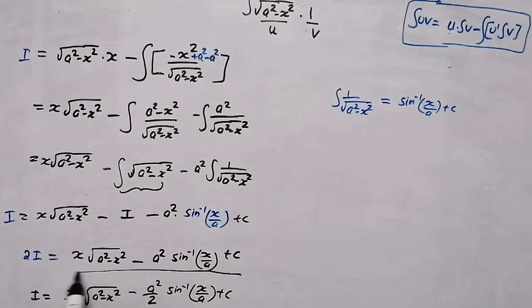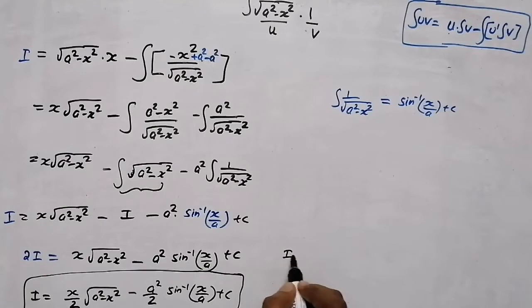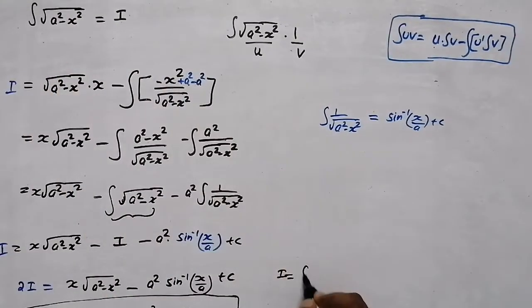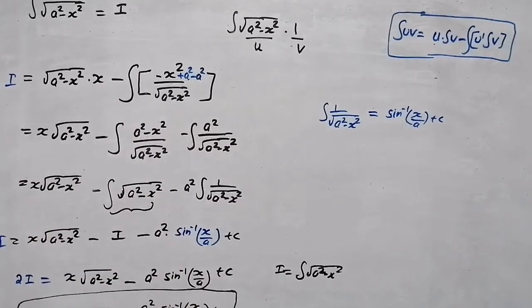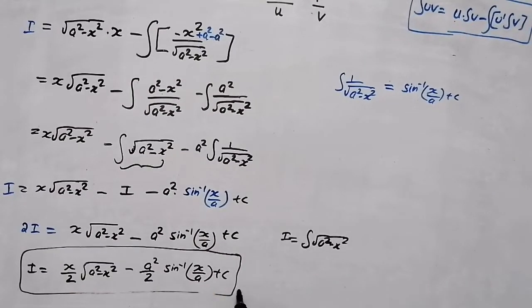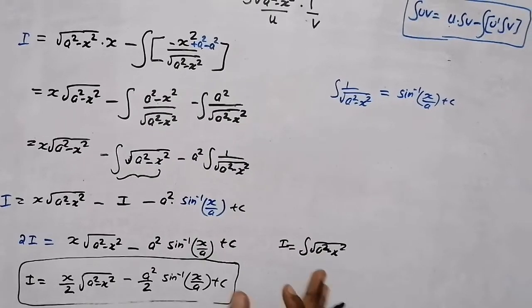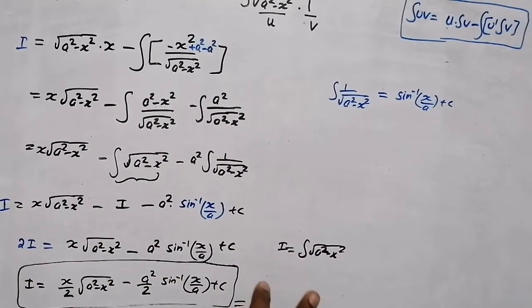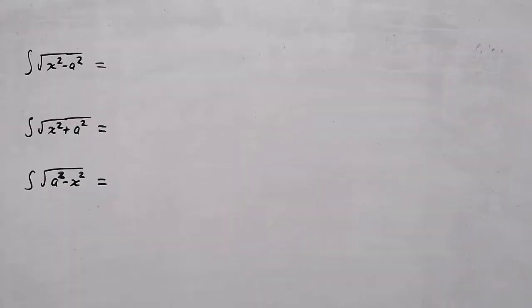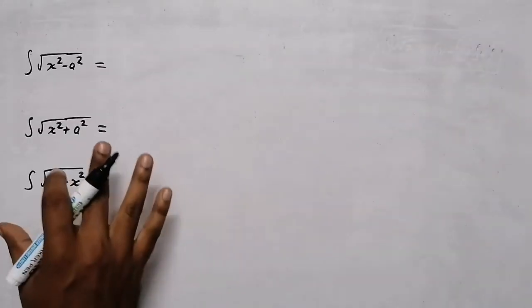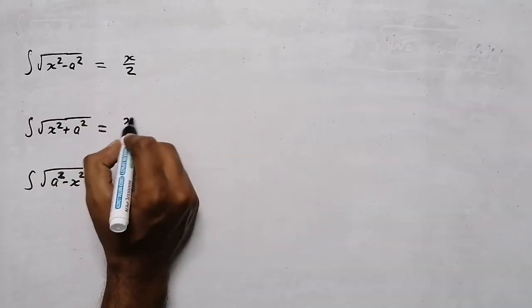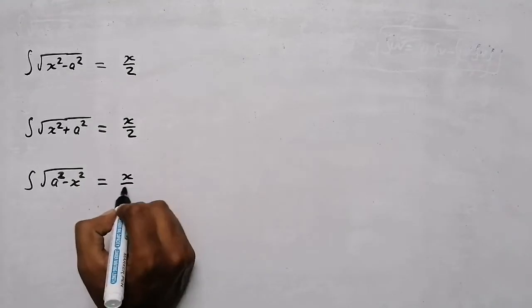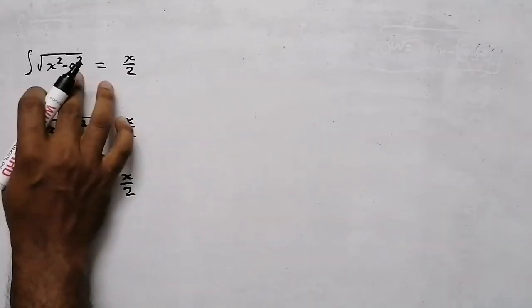This is the shortcut formula. These are the 3 types of integrations. The shortcut gives us: x by 2 appears in all 3 types. What is the question? The 3 types involve different forms.